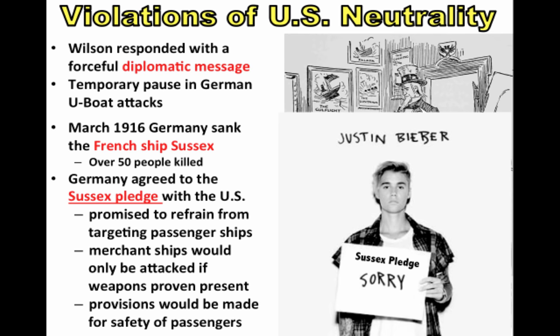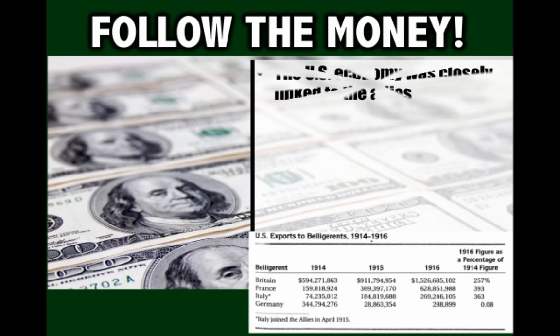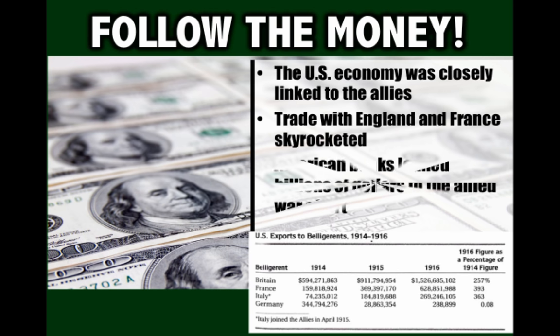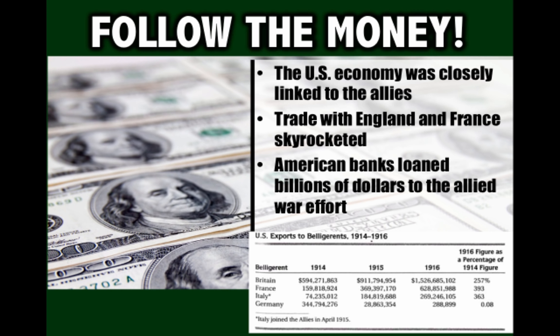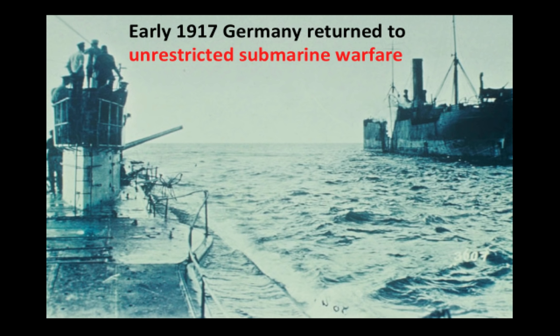With all these violations of US neutrality taking place, something else to keep in mind is: follow the money. Although the United States was officially neutral, the US economy was closely linked to the Allies. Trade with England and France skyrocketed — as you can see on the chart — while trade with Germany pretty much evaporated due to the British blockade. On top of that, American banks loaned billions of dollars to the Allied war effort, meaning the US was not truly neutral when it came to who received financial support during the war.